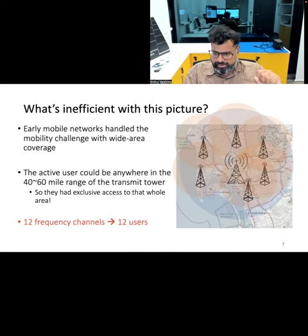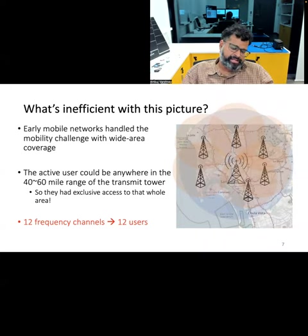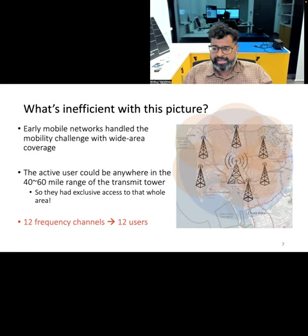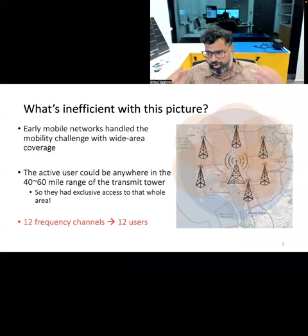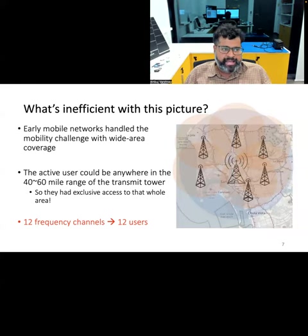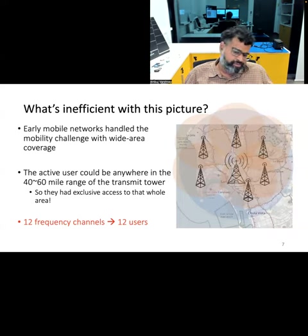The problem was that this actually increases the potential for interference, because your phone has to communicate over distances as high as 40 to 60 kilometers. Secondly, and most importantly, it leads to inefficient use of the spectrum. Allocating frequency or time for a specific user within such a large geographical area is like reserving a very large hall for a very small gathering — an excessive use of a resource for a very limited purpose. That is what made these original mobile phone networks highly inefficient, meaning you could only support tens of thousands of subscribers in a city.